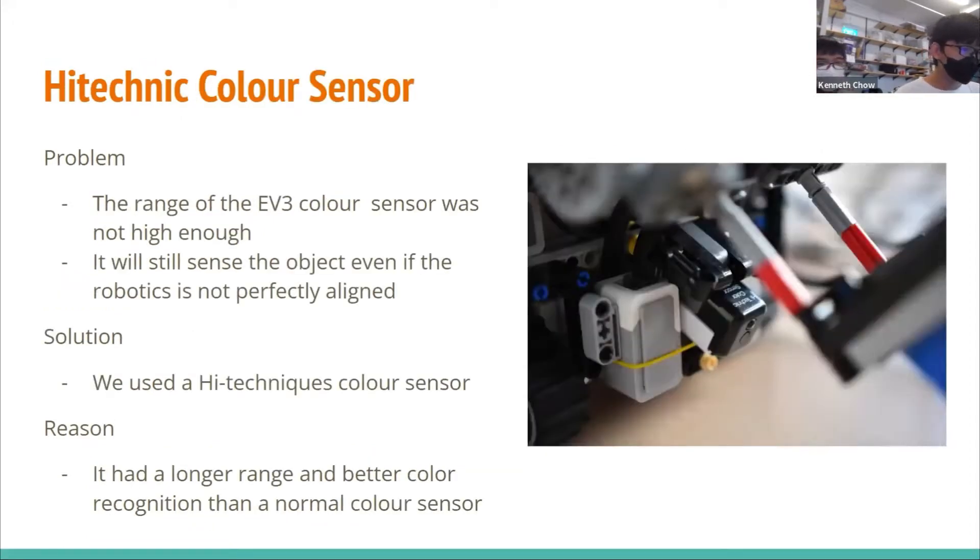The second change is the color sensor. We changed it to a Hi-technic color sensor, as the range of the Lego sensor was not high enough. It would still sense the object even if it was not perfectly aligned. So we used a Hi-technic color sensor as it has longer range and better color recognition than Lego.